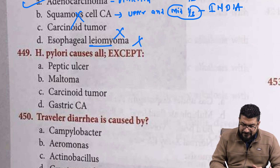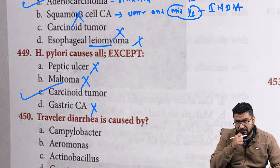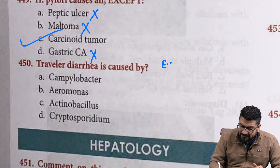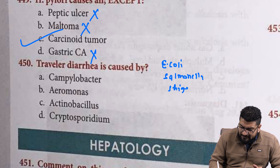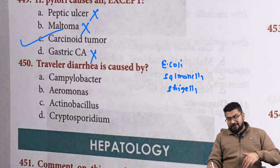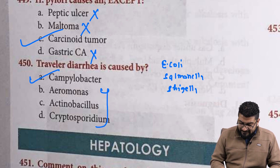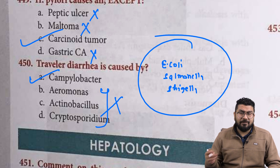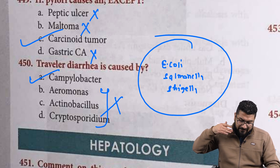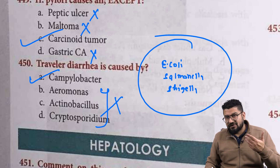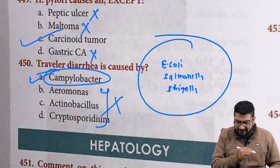H. pylori can cause peptic ulcer — yes; MALToma — yes; gastric cancer — yes; but carcinoid tumor — no, that is due to serotonin. Traveler's diarrhea: the correct answer should be E. coli, but it is not given in the options. For Indian perspective, it can occur due to Salmonella or Shigella. In foreign countries — Caucasian countries like Europe or America — the most common cause is Campylobacter. If you go to Nepal, cyclospora is common; Russia, Giardia (GRD) is common; US and Europe, Campylobacter is common. So the answer will be A.